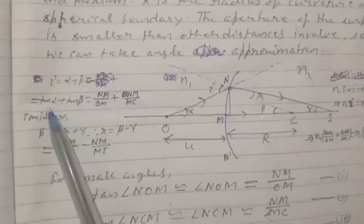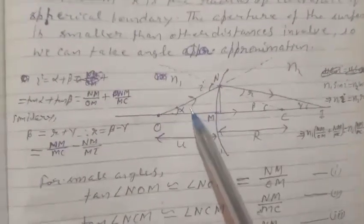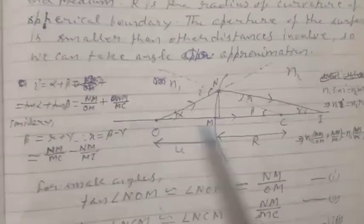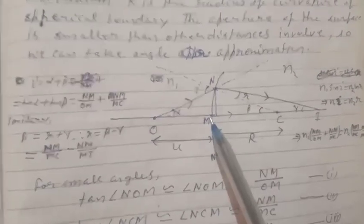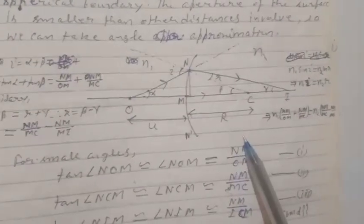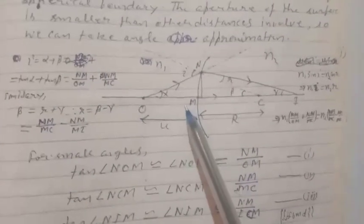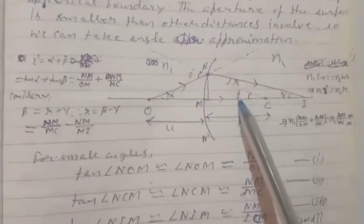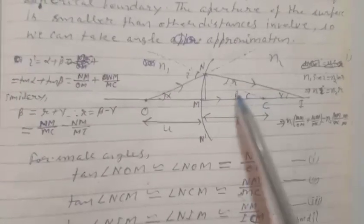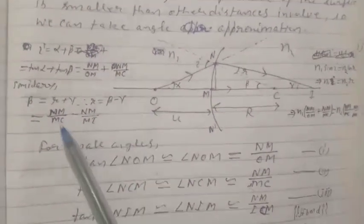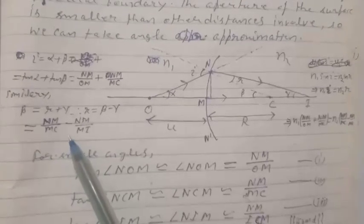The exterior angle equals the sum of the interior angles, so i equals alpha plus beta. By the small-angle approximation, we write tan alpha plus tan beta. Here tan alpha equals NM/OM and tan beta equals NM/MC. Similarly, beta for the triangle is the exterior angle, and beta equals r plus gamma, so r equals beta minus gamma.